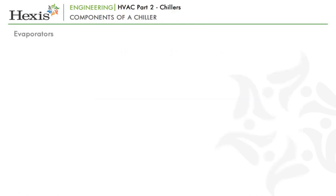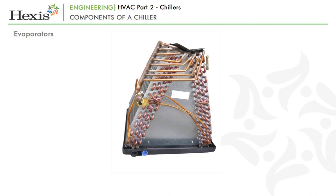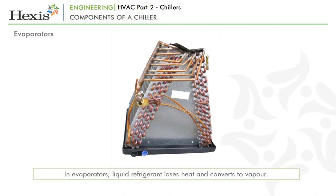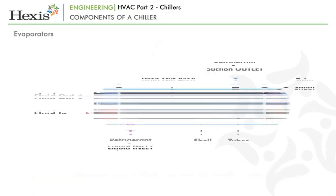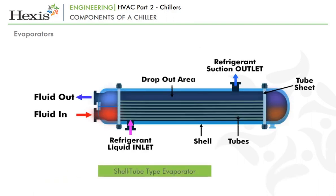The last component of chillers that we are going to discuss is the evaporator. As learned in the previous module, evaporators are where the liquid refrigerant loses its heat and converts to vapour, thereby cooling the medium. In a chiller, the evaporator is of the shell and tube type, just like the one seen in the condenser. The refrigerant could be in tubes, i.e. dry expansion, or in the shell, i.e. flooded type, while the water will be on the other side.